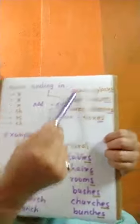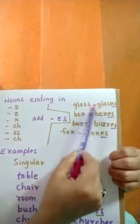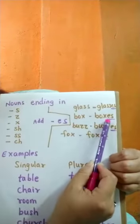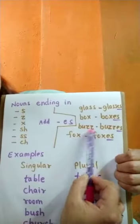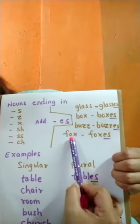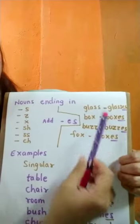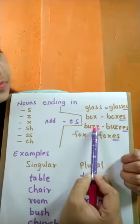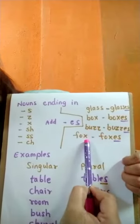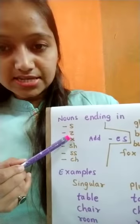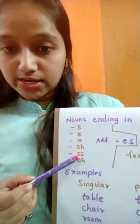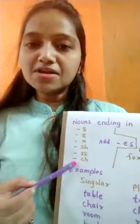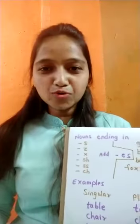Same way, you can see the words here: class becomes classes, box becomes boxes, bus becomes buses, fox becomes foxes. All these words are ending with S, SS, X, Z, SH, or CH. So whenever a word ends with these letters, simply add ES to make it plural.